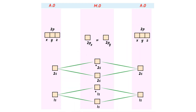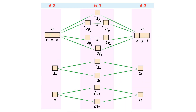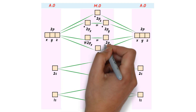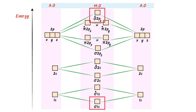2px and 2py have the same energy, so I write them together and write 2pz below them — these are three bonding molecular orbitals. Then I write the three anti-bonding molecular orbitals: 2px* = 2py* and 2pz*. We know 1s and 2s form sigma bonds, 2px and 2py form pi bonds, and 2pz forms a sigma bond. Remember that energy increases from bottom to top — sigma 1s has the lowest energy while sigma* 2pz has the highest energy.